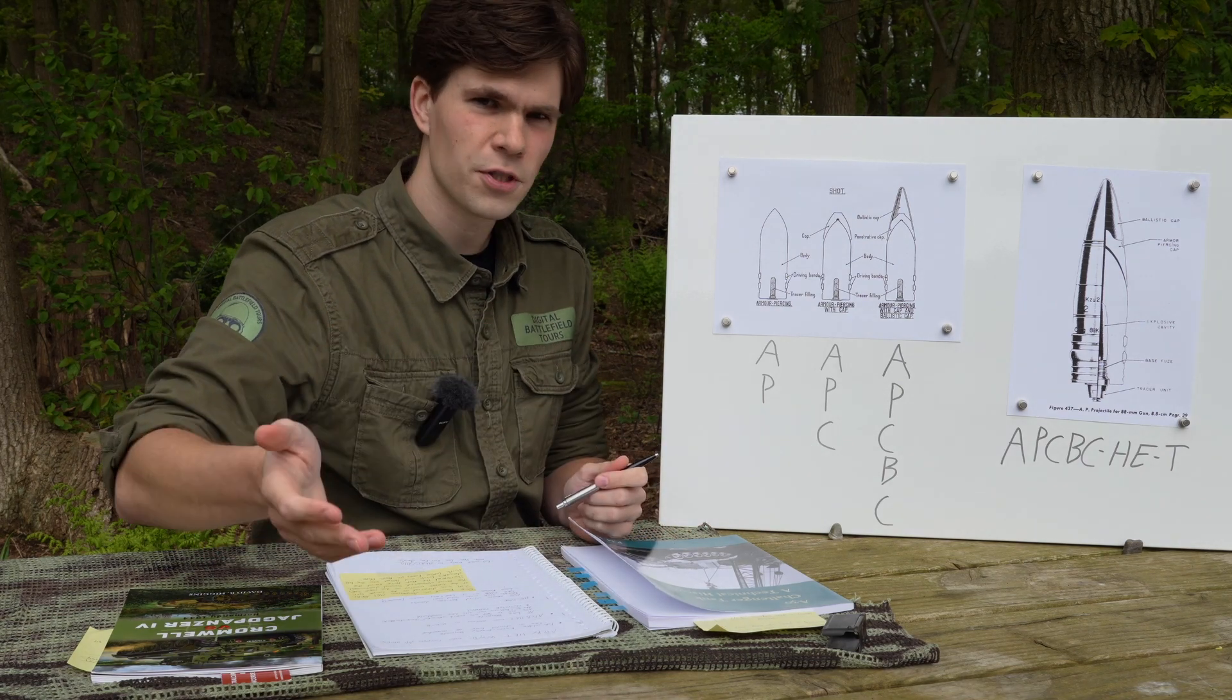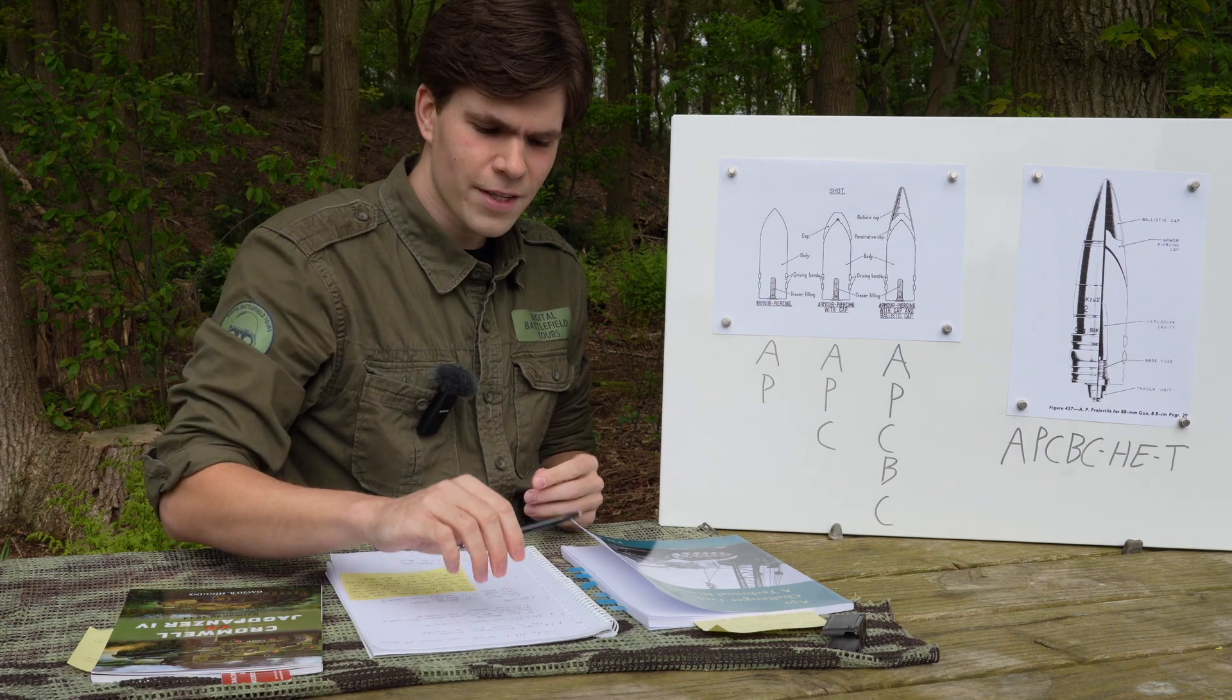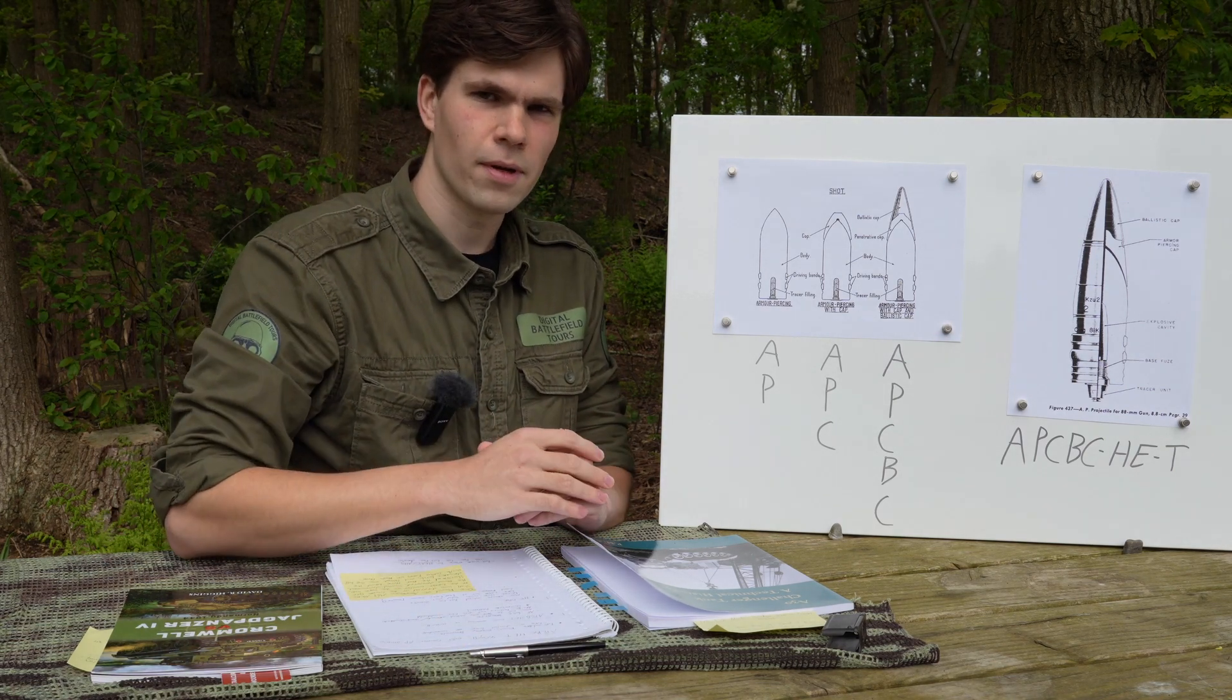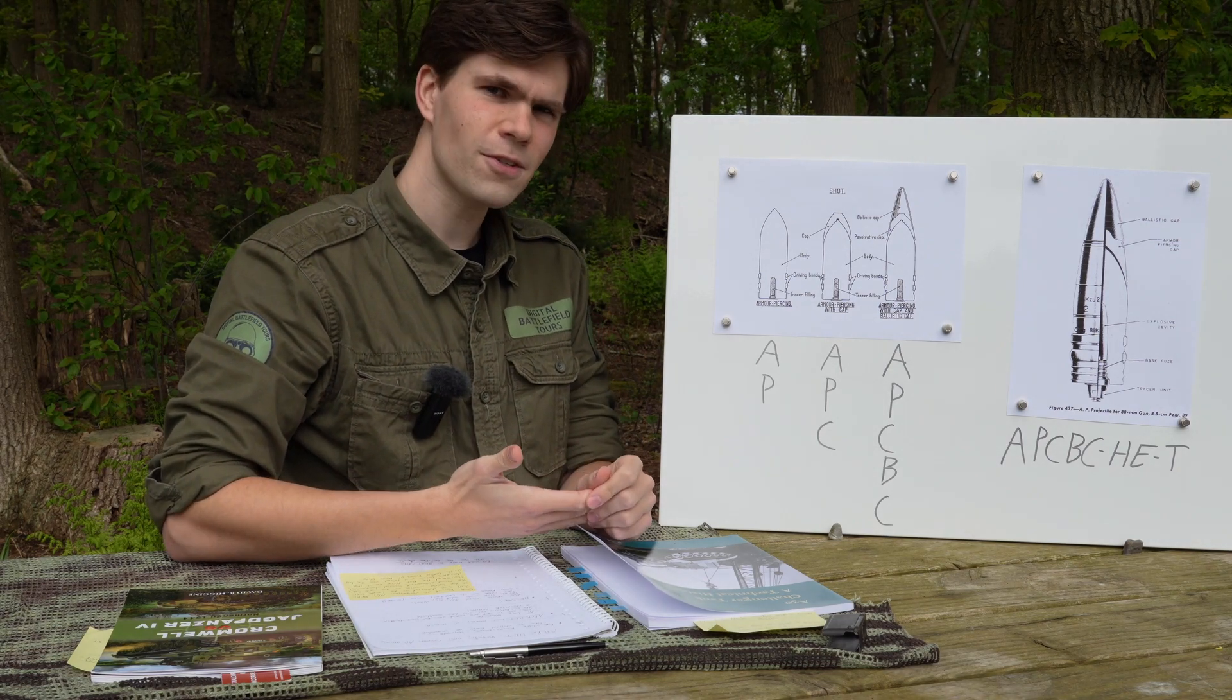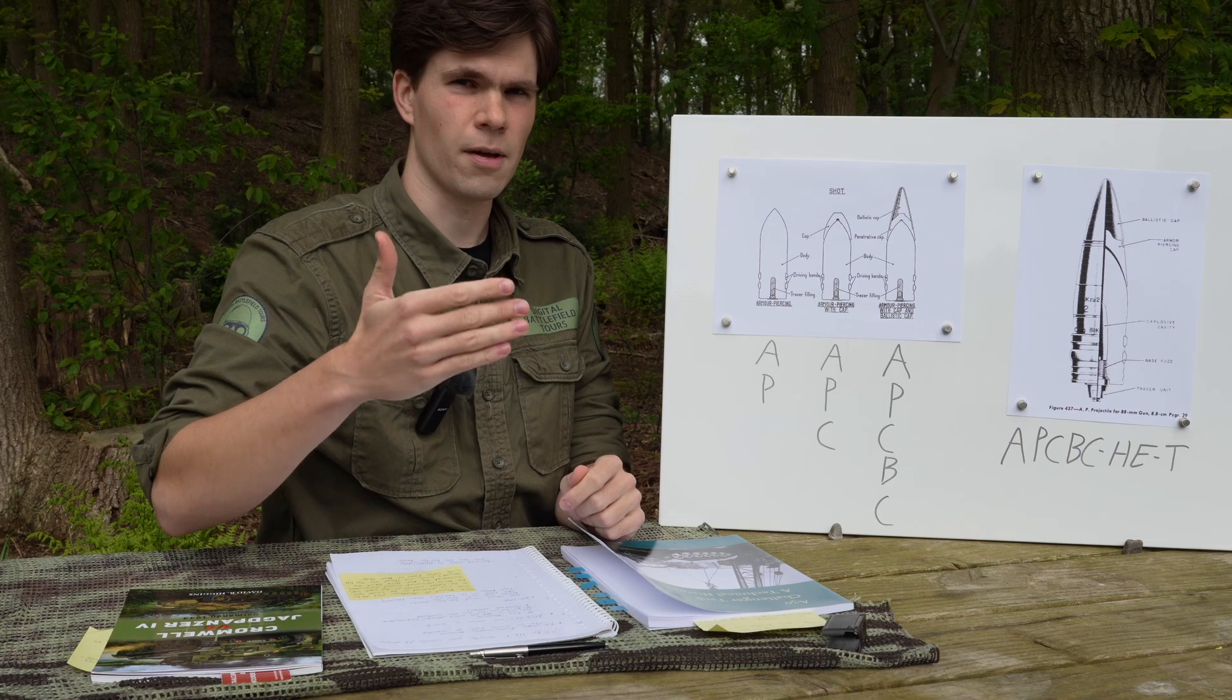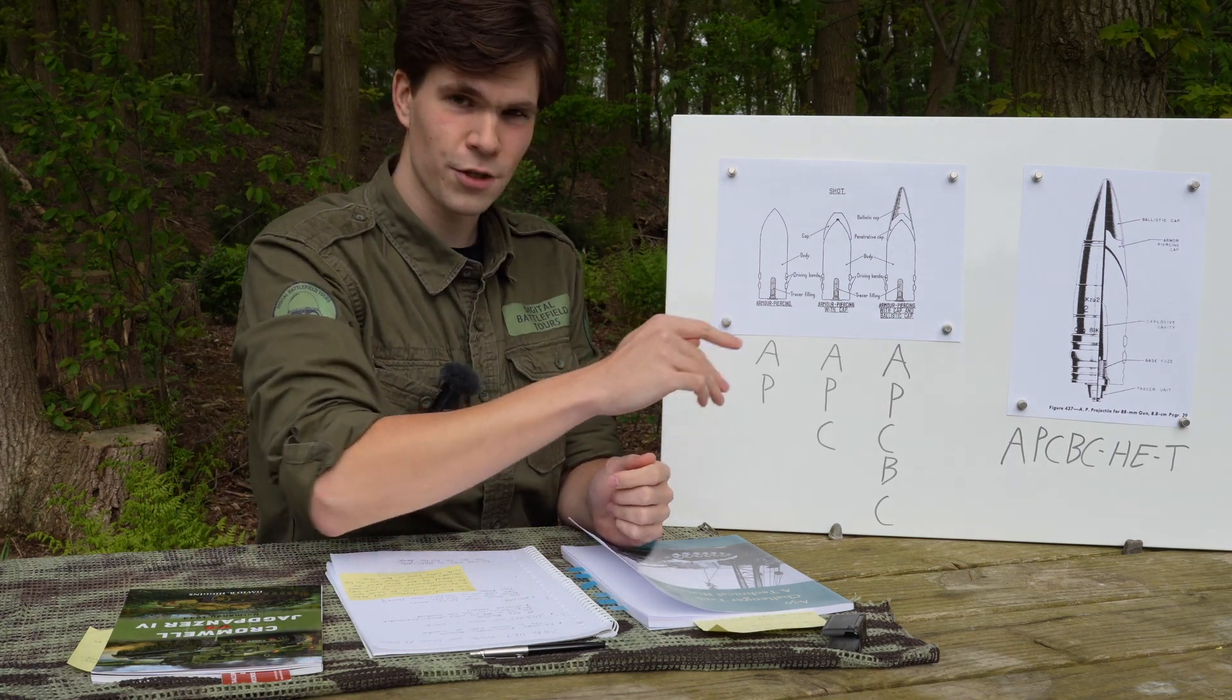They tried it on the 2 pounder which was their 40 millimeter anti-tank gun used in the beginning of the war but they didn't like it. So they just stuck with regular AP, APC, APCBC for all their guns - 2 pounder, 6 pounder, 17 pounder. They even went so far as taking the HE filler out of foreign ammunition that they received.